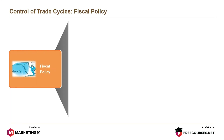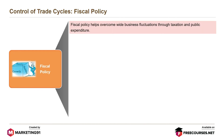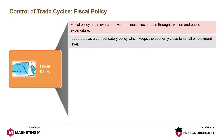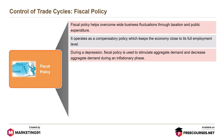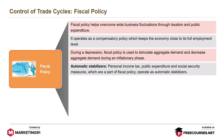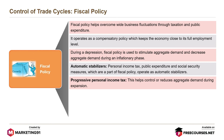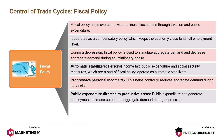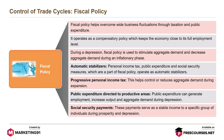Fiscal policy helps overcome wide business fluctuations through taxation and public expenditure. It operates as a compensatory policy keeping the economy close to its full employment level. During depression, fiscal policy stimulates aggregate demand; during an inflationary phase, it decreases aggregate demand. Automatic stabilizers include personal income tax, public expenditure, and social security measures. Progressive personal income tax helps control aggregate demand during expansion. Public expenditure directed to productive areas can generate employment, increase output, and raise aggregate demand during depression. Social security payments serve as a stable income to specific groups during both prosperity and depression.